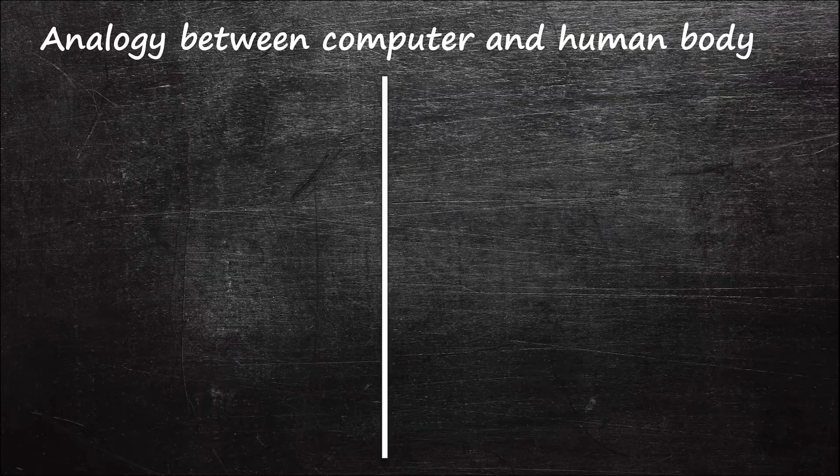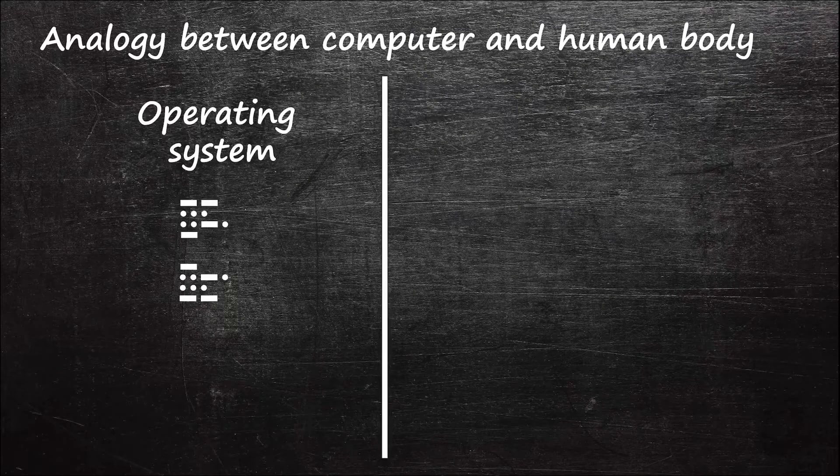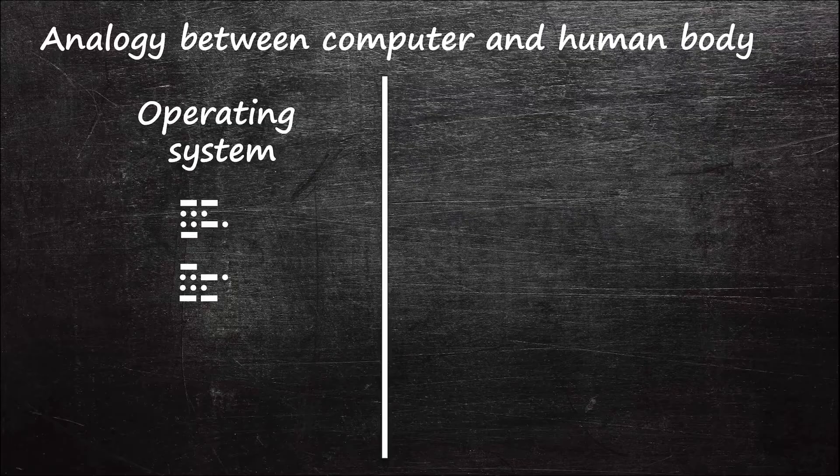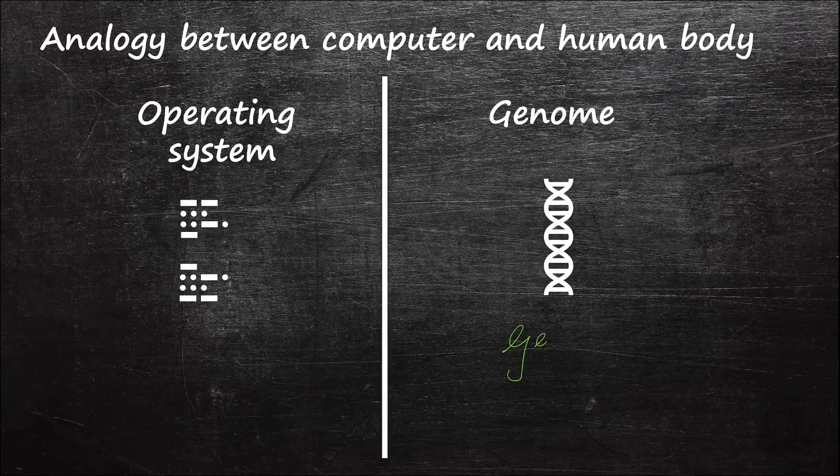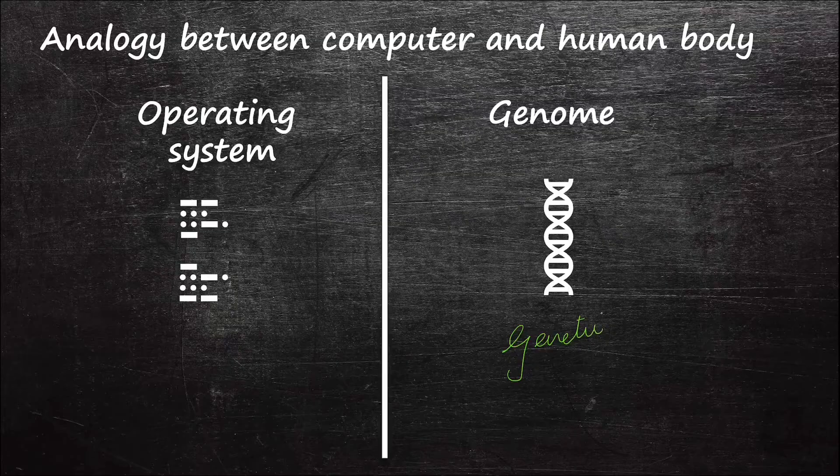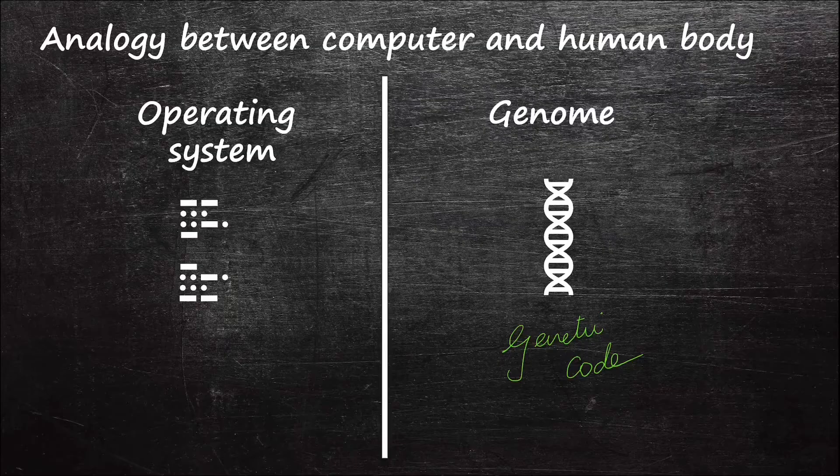How a computer will function is determined by the codes written in its operating system. Similarly, the function of human organs are decided by the genetic codes in its genome. The genome is a collection of all the genetic information in an organism which directs how the body must work.